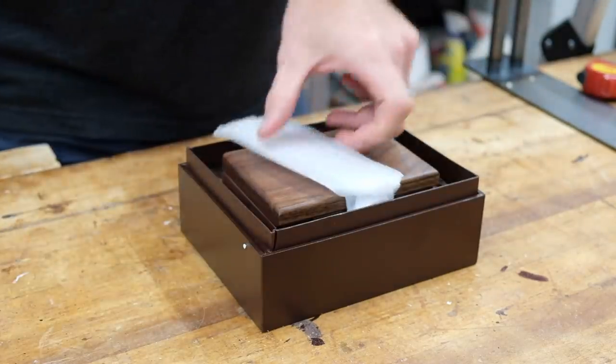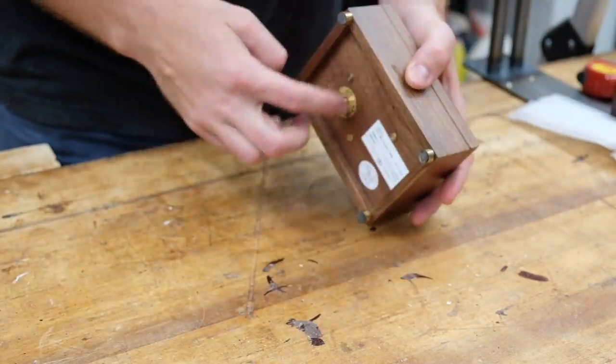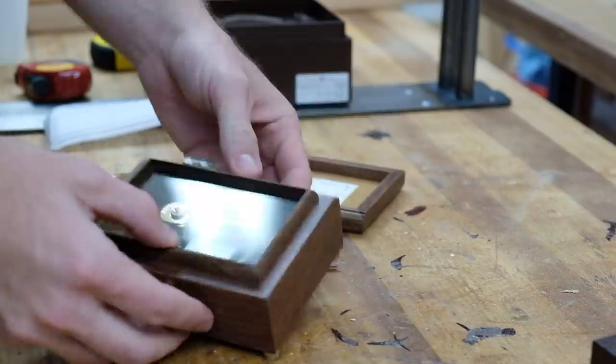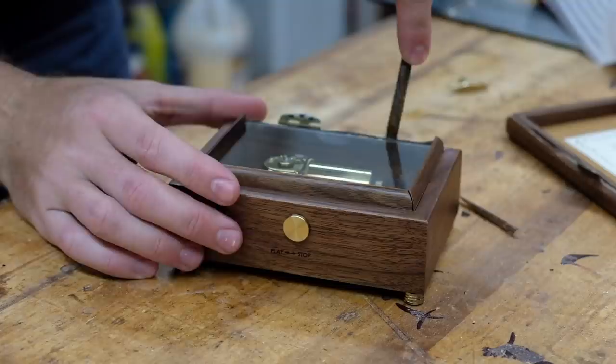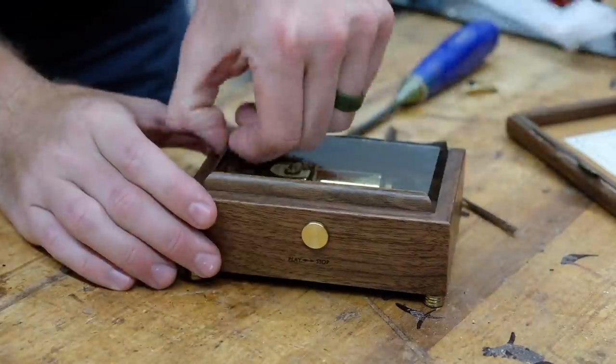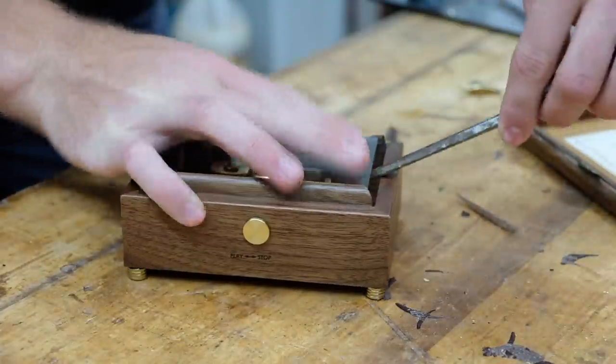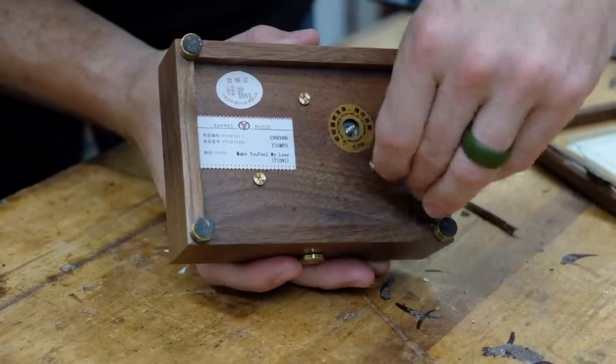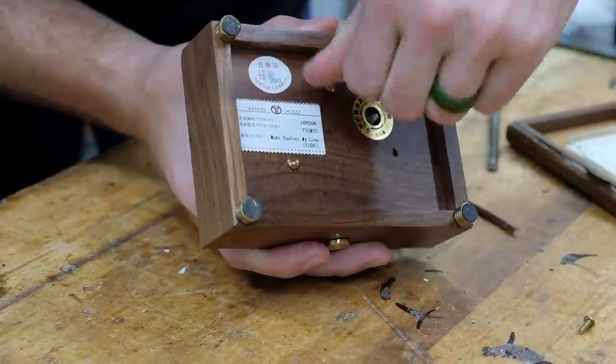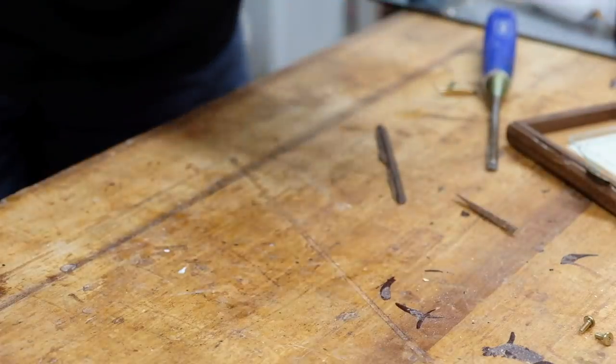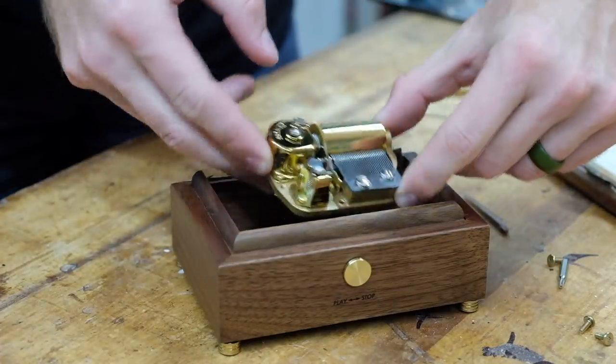I wasn't able to find the mechanism I needed just by itself. It only came in a box, and that box ended up being a lot nicer than I was expecting. It pained me to tear it apart considering it's actually made of walnut, had an on-off switch, and a nice piece of glass to protect the mechanism. Nonetheless, I tore it apart to get the mechanism out, and then used the bottom as a template for the placement of the holes.